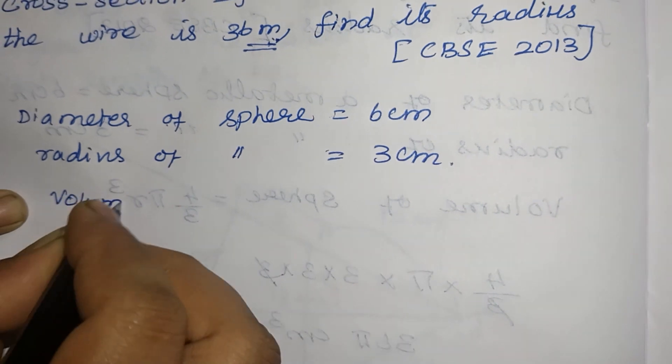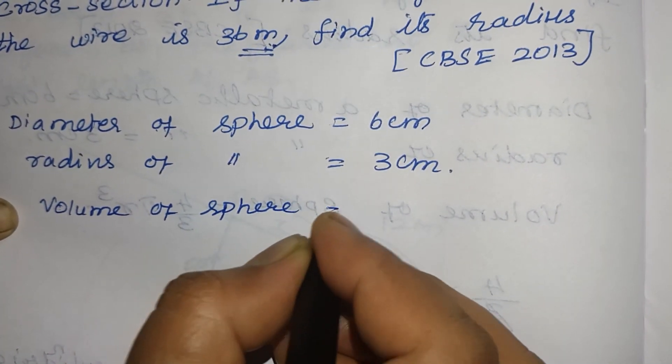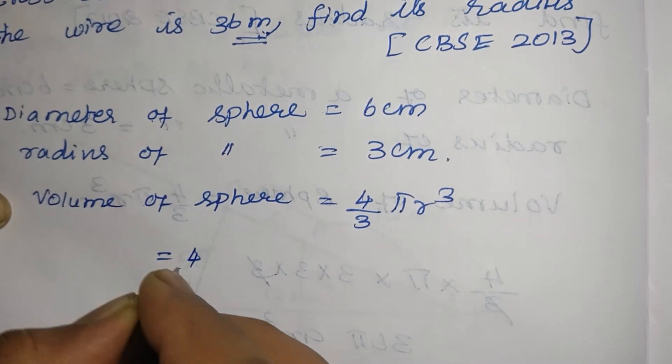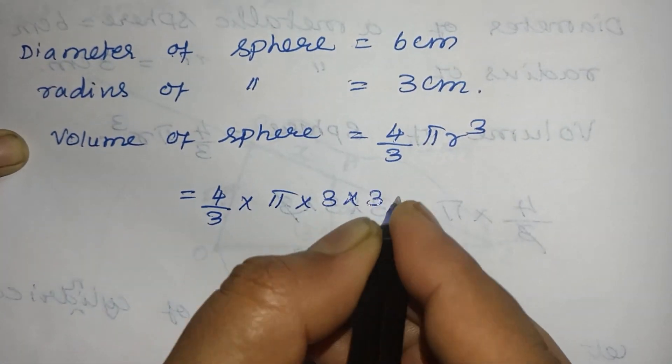Volume of a sphere equal to 4 by 3, pi r cube. That is equal to 4 by 3 into pi into 3 into 3 into 3.